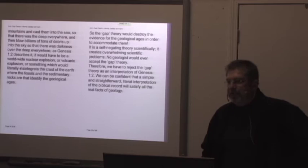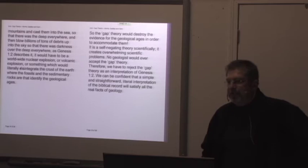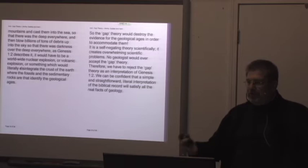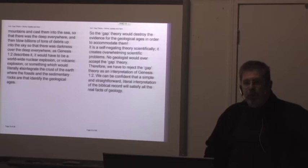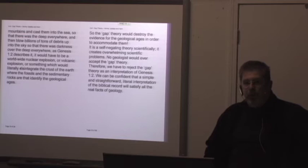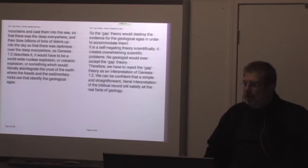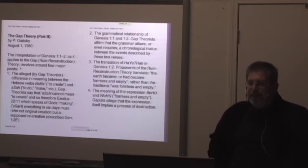Or perhaps a global ice sheath covering everything. I mean, there are a lot of possibilities here. Lots of possibilities other than how he describes it. So the gap theory would destroy the evidence for the geological ages in order to accommodate them. Oh, those gap theorists are dumb people, aren't they? They would destroy the evidence of the geological ages in order to accommodate them because only Henry Morris' concept of cataclysm could possibly happen and that would destroy the geological ages. It is a self-negating theory scientifically. It creates overwhelming scientific problems. No geologist would ever accept the gap theory. Therefore, we have to reject the gap theory as an interpretation of Genesis 1:2. Except all the geologists reject the young earth theory even more than they reject the gap theory.